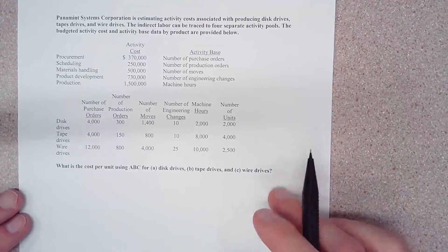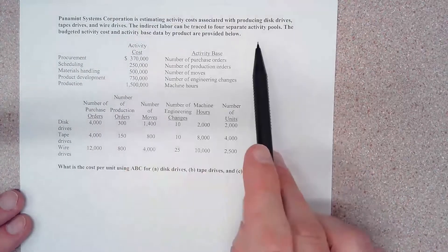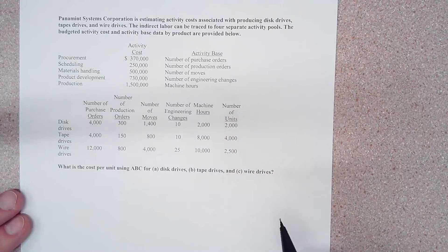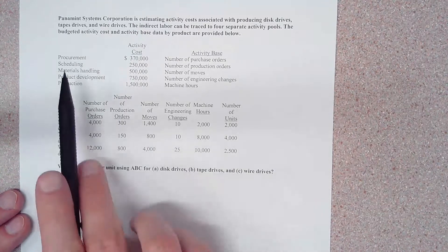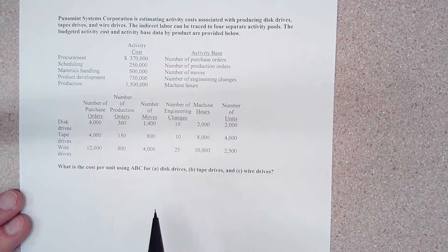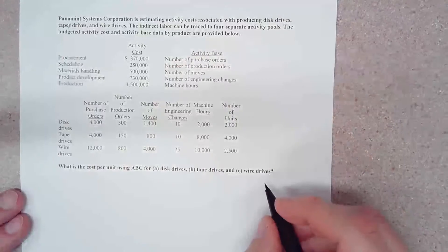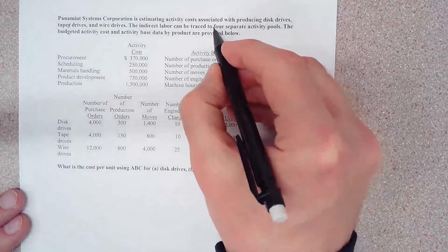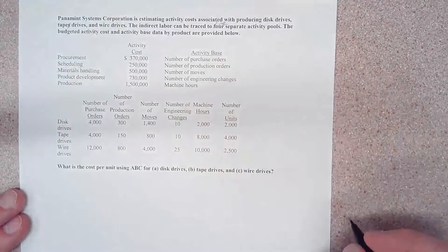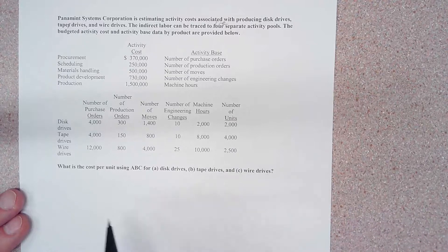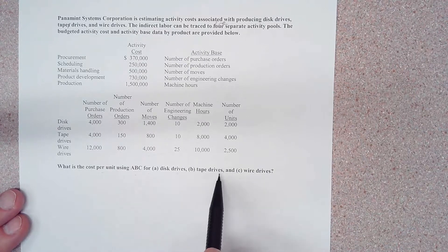Let's take a look at this question. It's the exact same scenario — all of these numbers are the same as what we saw in the last video when we were determining the activity rate for these five activity pools. The only thing that has changed is the question: what is the cost per unit using ABC for disk drives, tape drives, and wire drives?